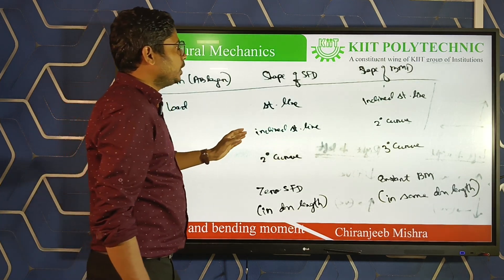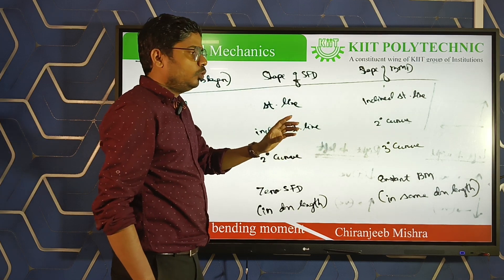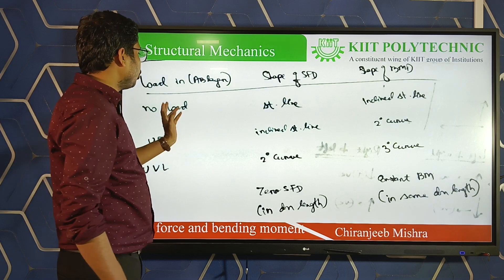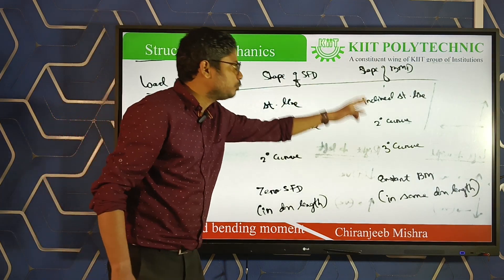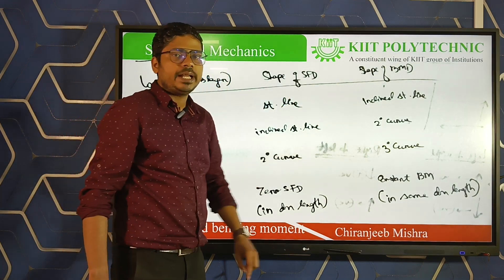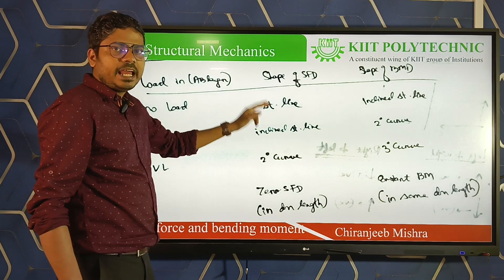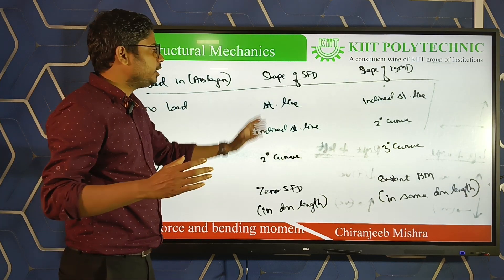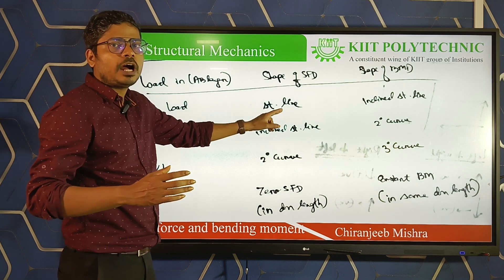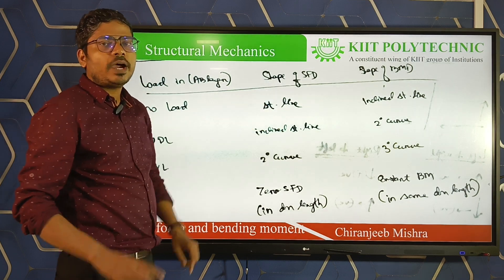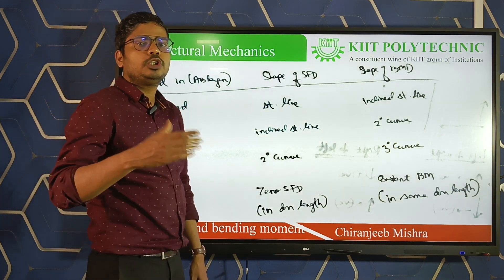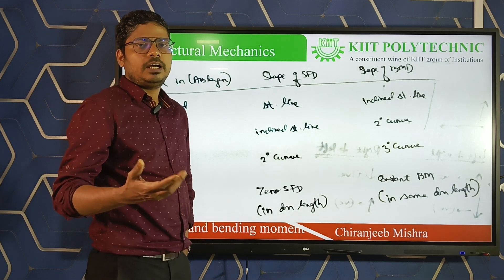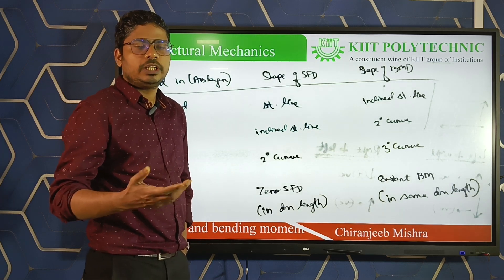Now we'll see how the shear force and bending moment diagrams look with different types of loading. If there is no load in a section, the shear force diagram will be a straight line (like y = mx giving a straight line), and the bending moment diagram will be an inclined straight line.